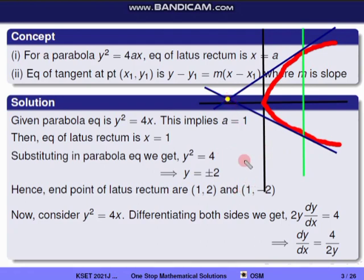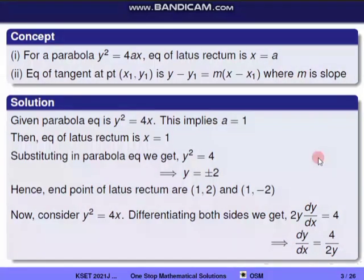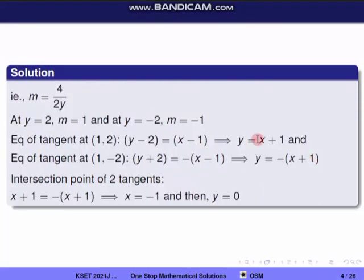First we will take the slope of the tangent. We will differentiate the curve equation with respect to x. So we take y² equal to 4x and differentiate: 2y dy/dx equal to 4, so dy/dx equal to 4 by 2y. So dy/dx is the slope, that is m equal to 4 by 2y.